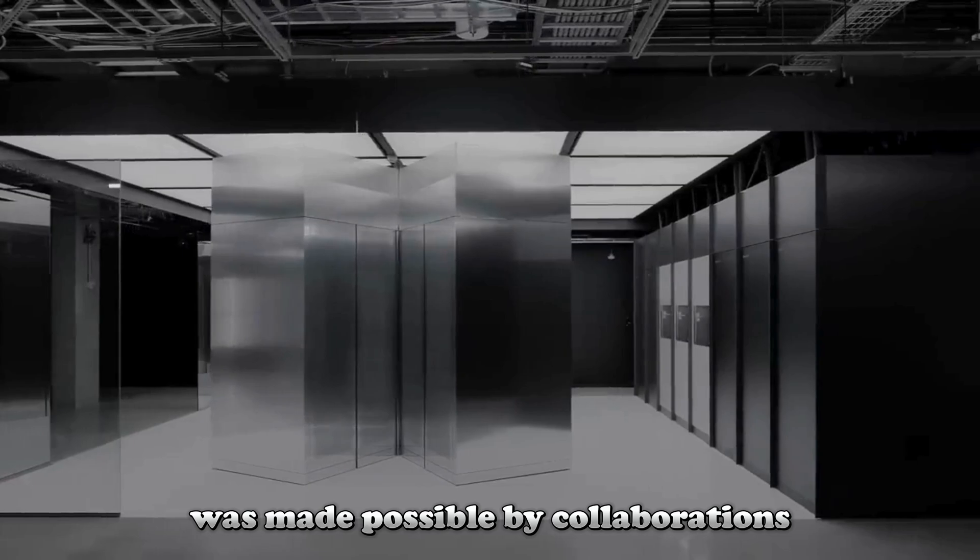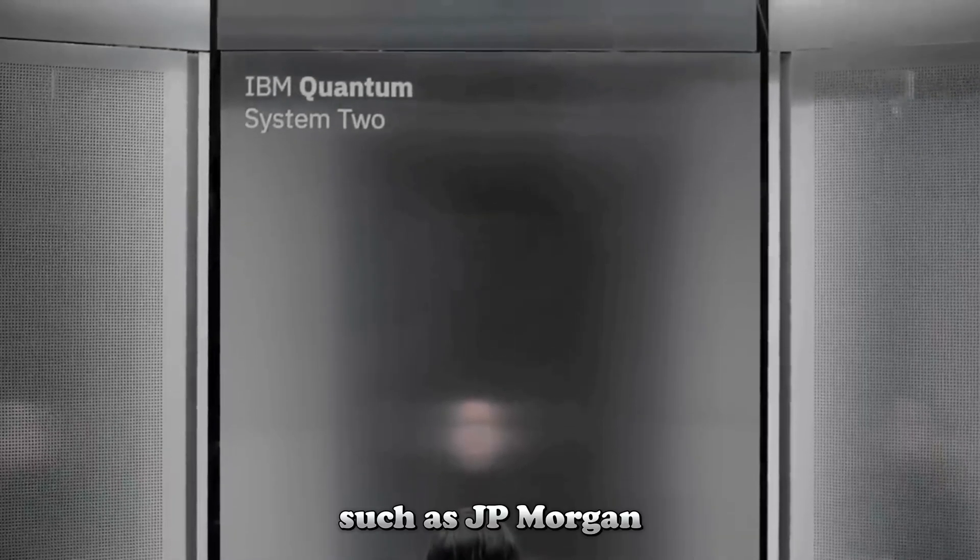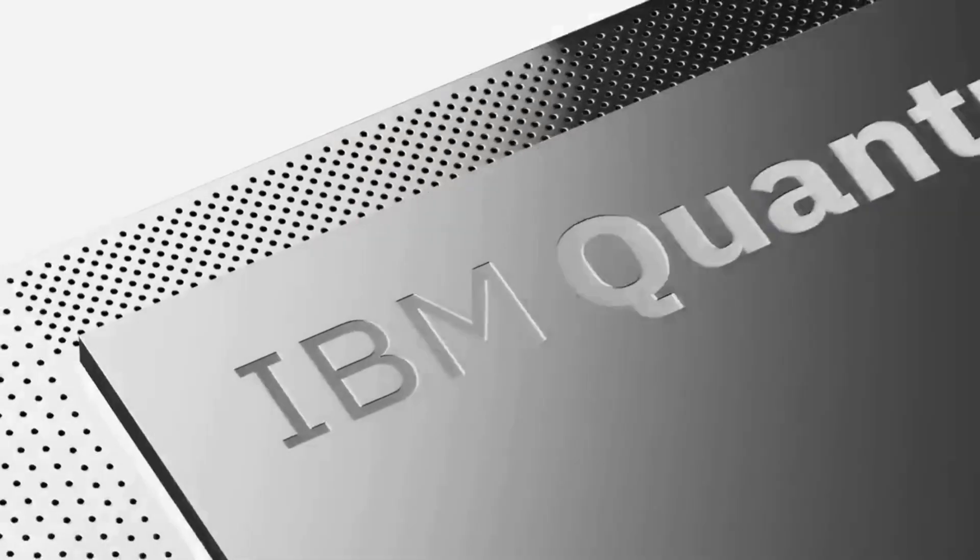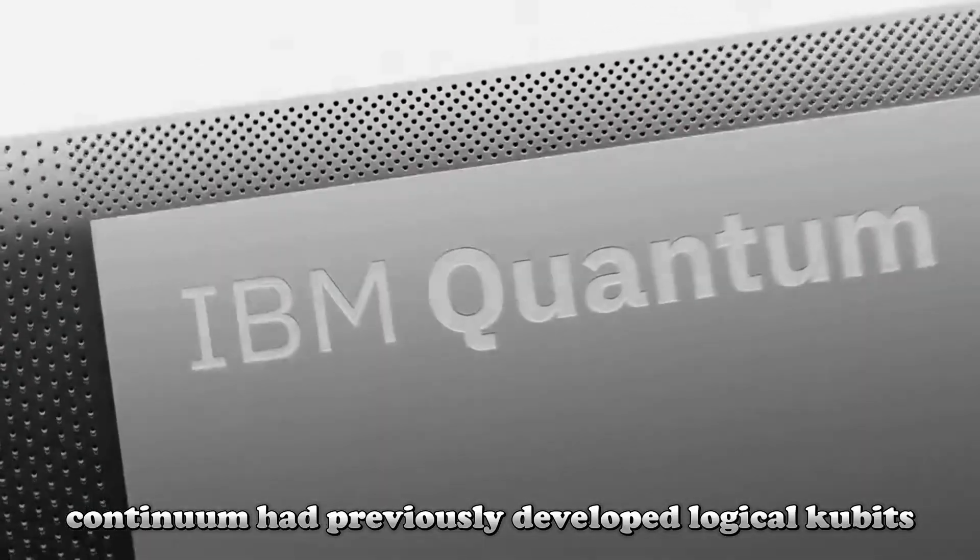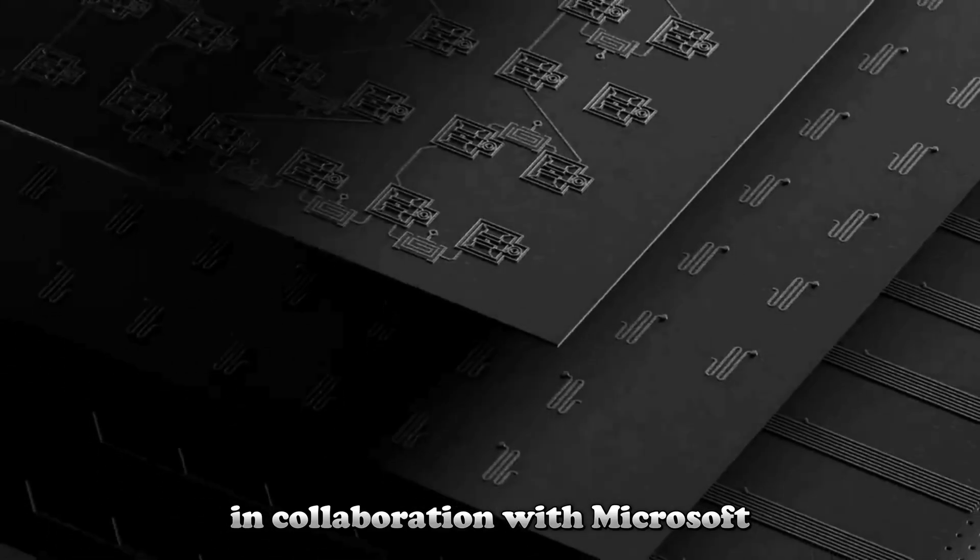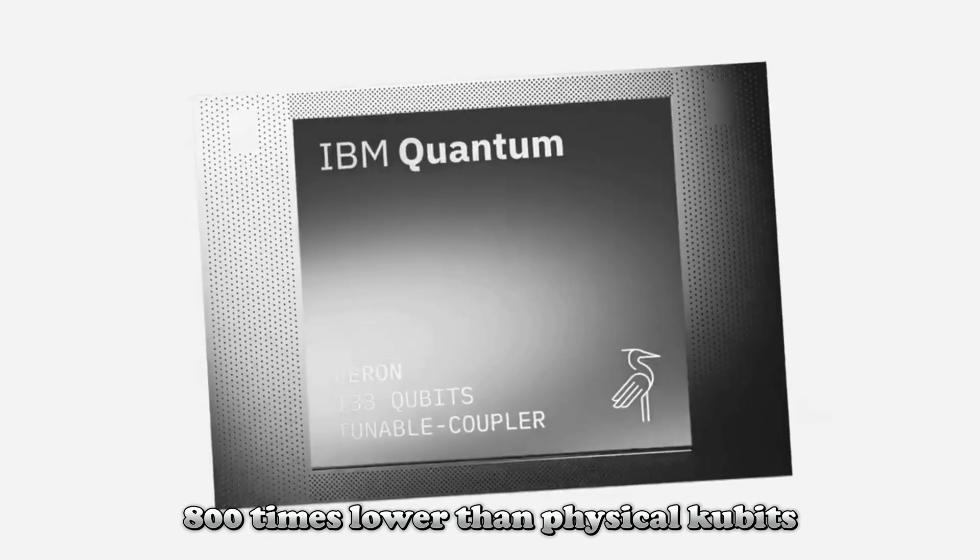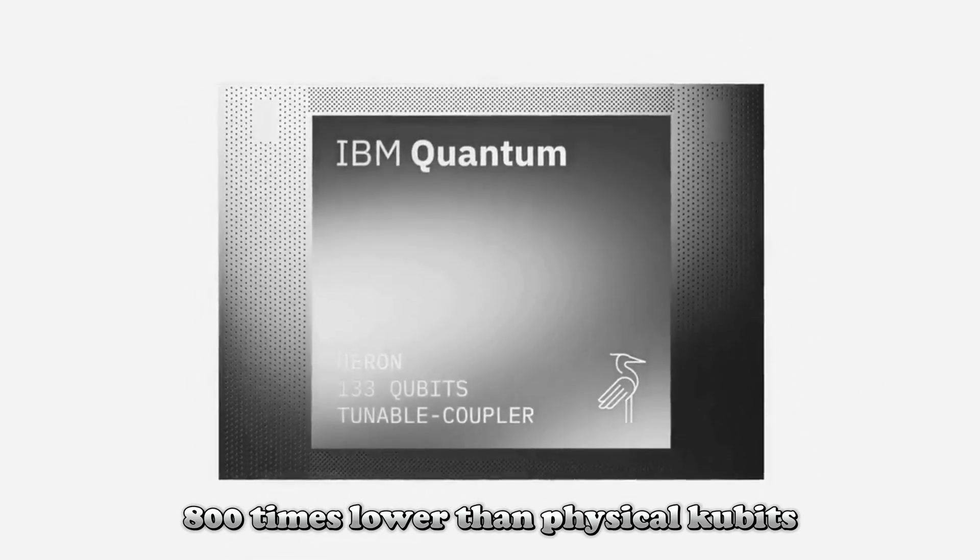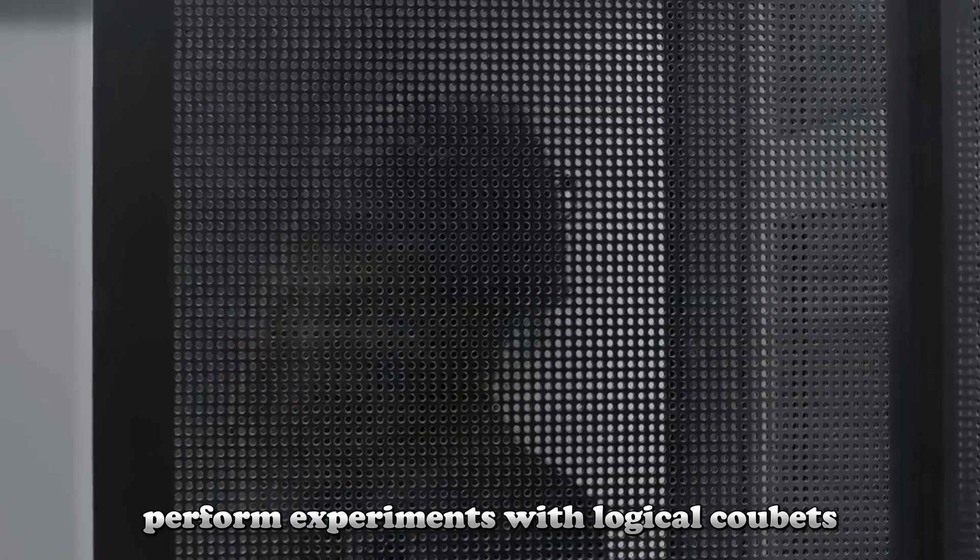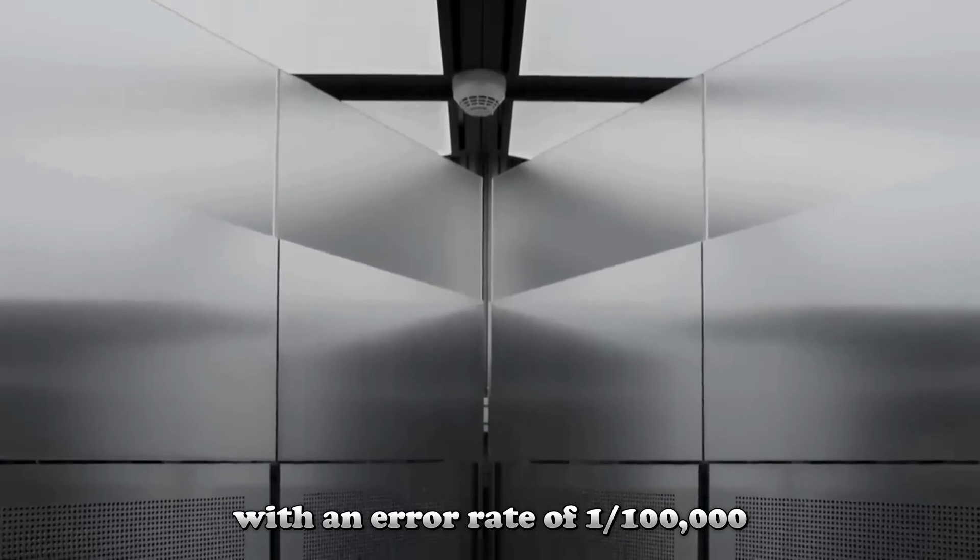Quantinuum's success was made possible by collaborations with prestigious institutions such as JPMorgan, Caltech, and Argonne National Laboratory. Furthermore, Quantinuum had previously developed logical qubits in collaboration with Microsoft. These logical qubits had an error rate 800 times lower than physical qubits. In a study published in April, scientists showed that they could perform experiments with logical qubits with an error rate of one one-hundred-thousandth. This is a huge improvement compared to the one one-hundredth error rate of physical qubits.